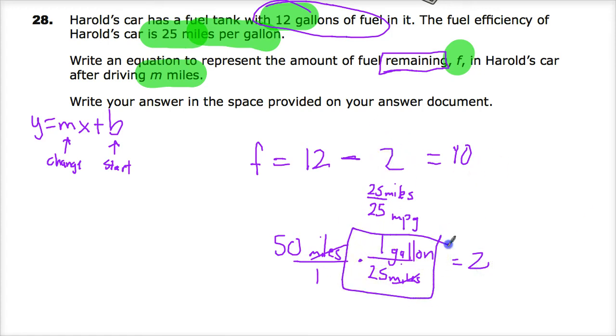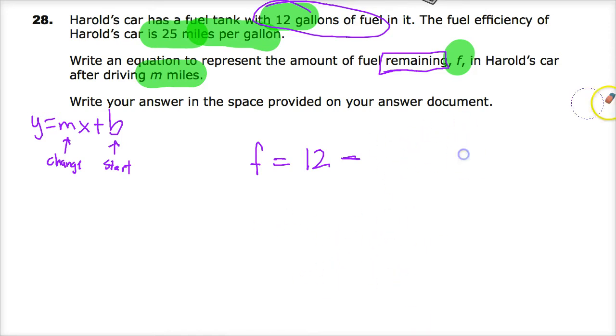You'll notice the 25 is on the bottom. I'm taking the miles I'm driving and dividing by 25. How do I relate that to the original problem? I'm not looking for a specific amount, I'm looking for a generic equation. So I need to take the miles driven and divide by 25.